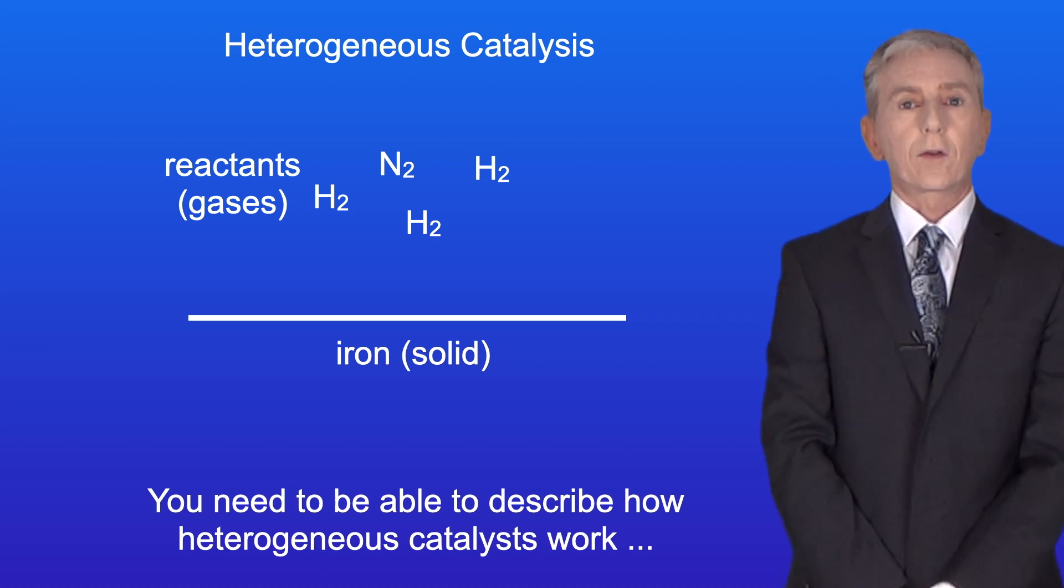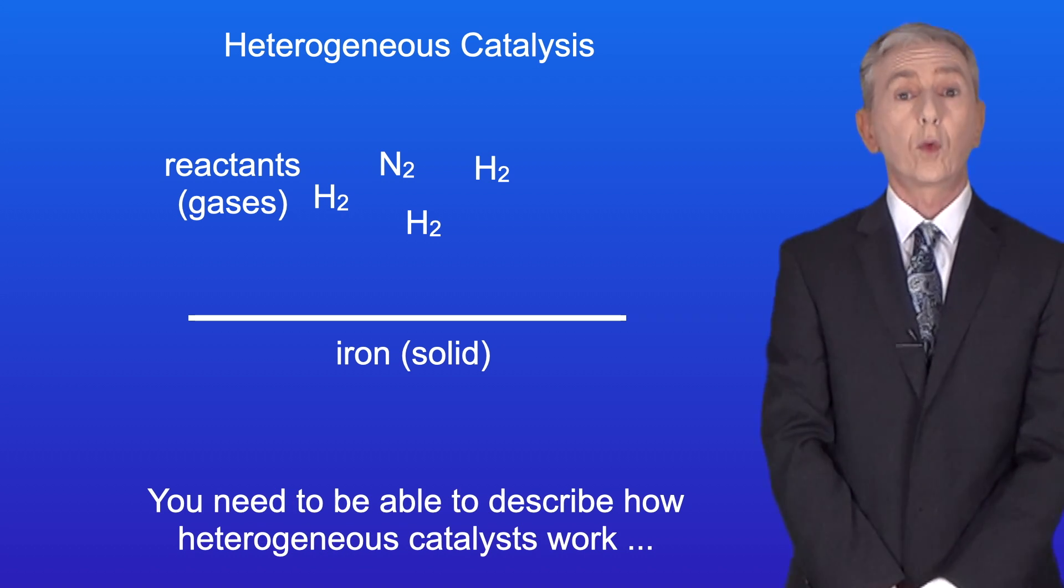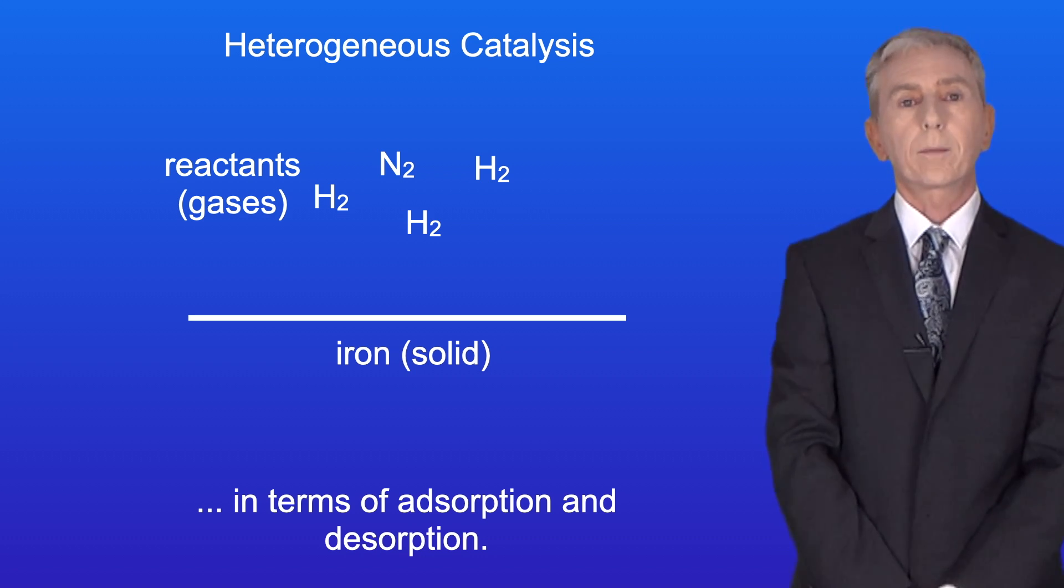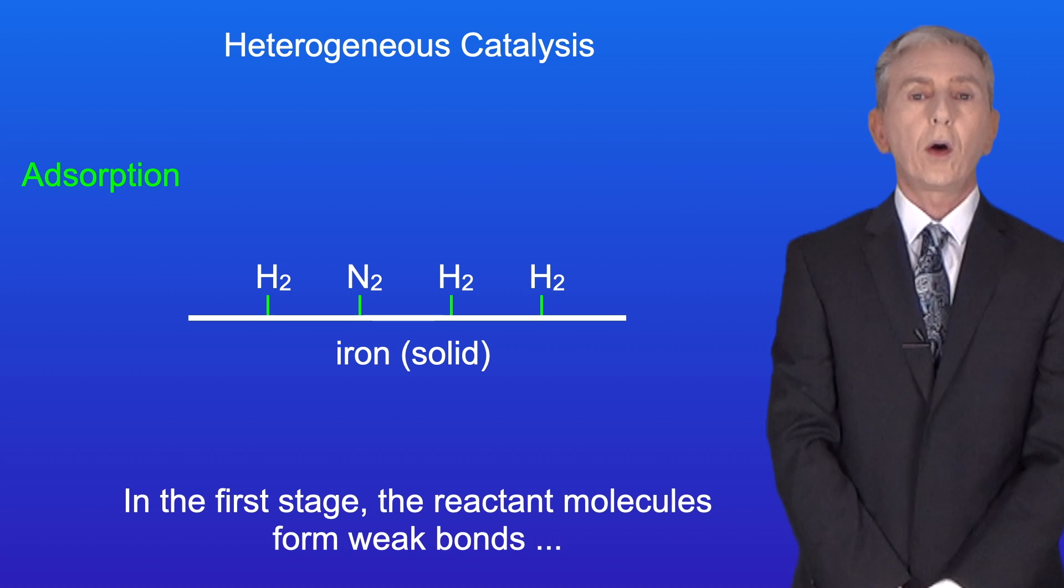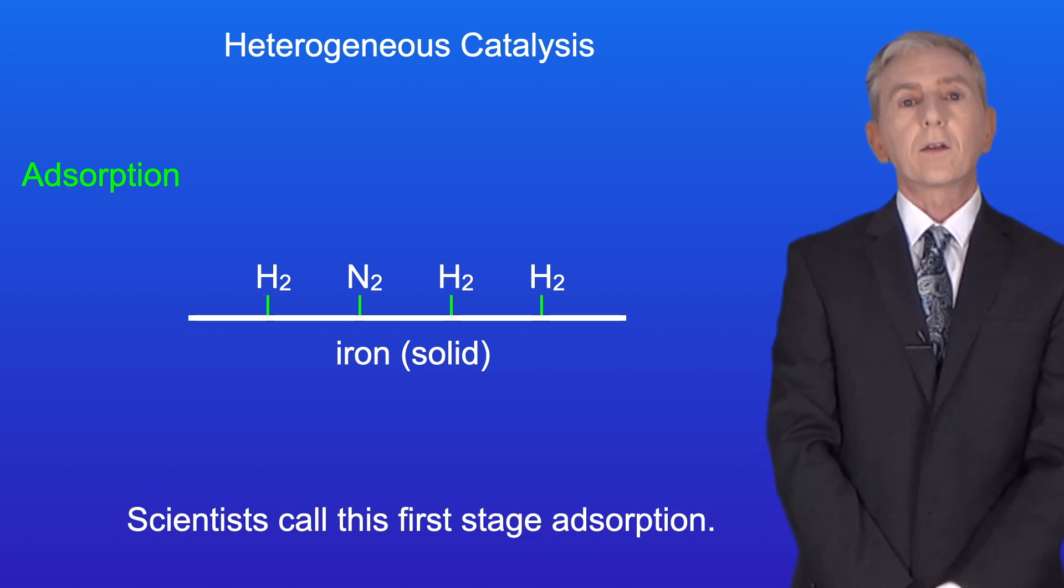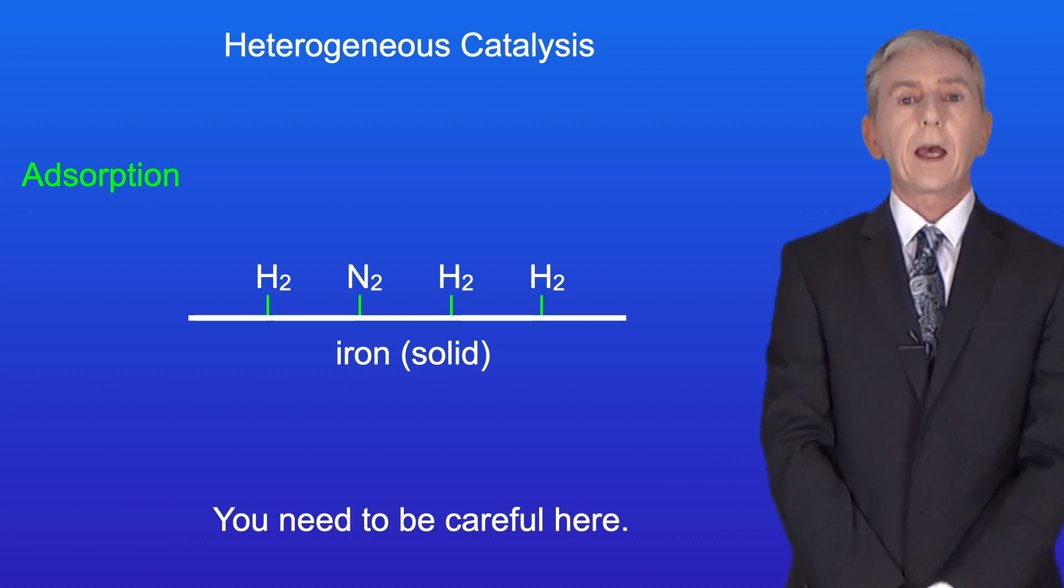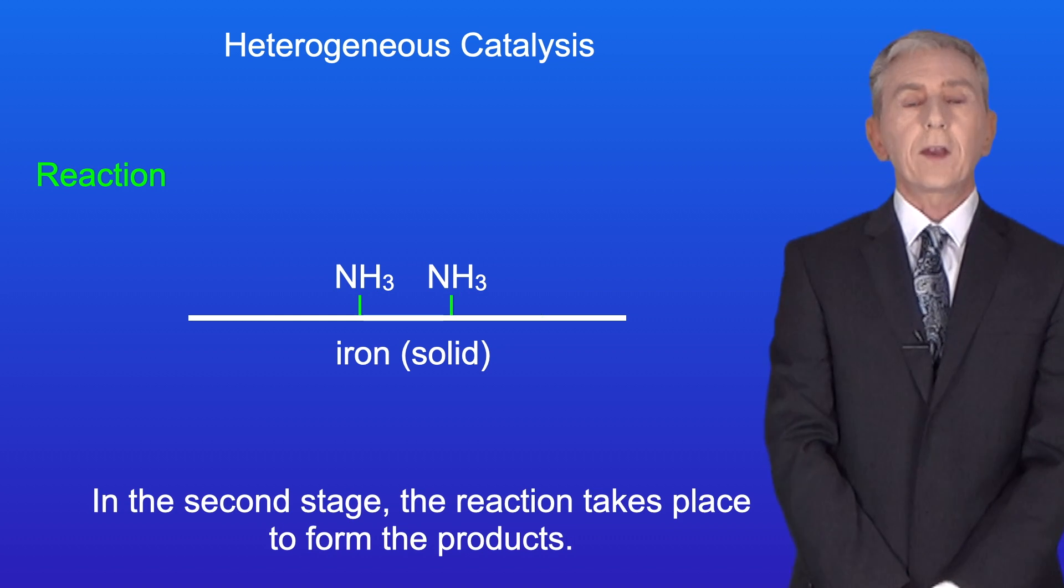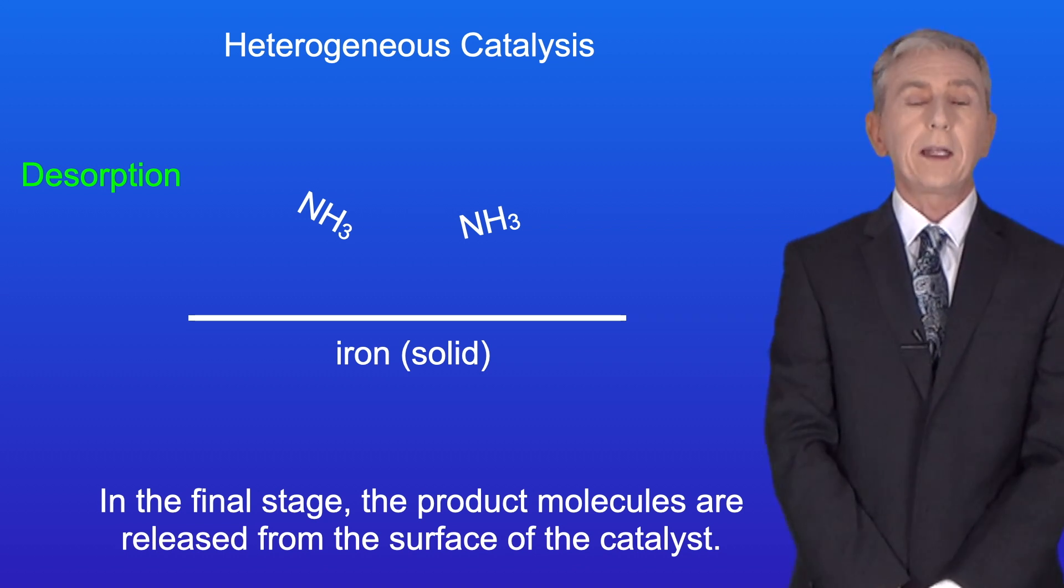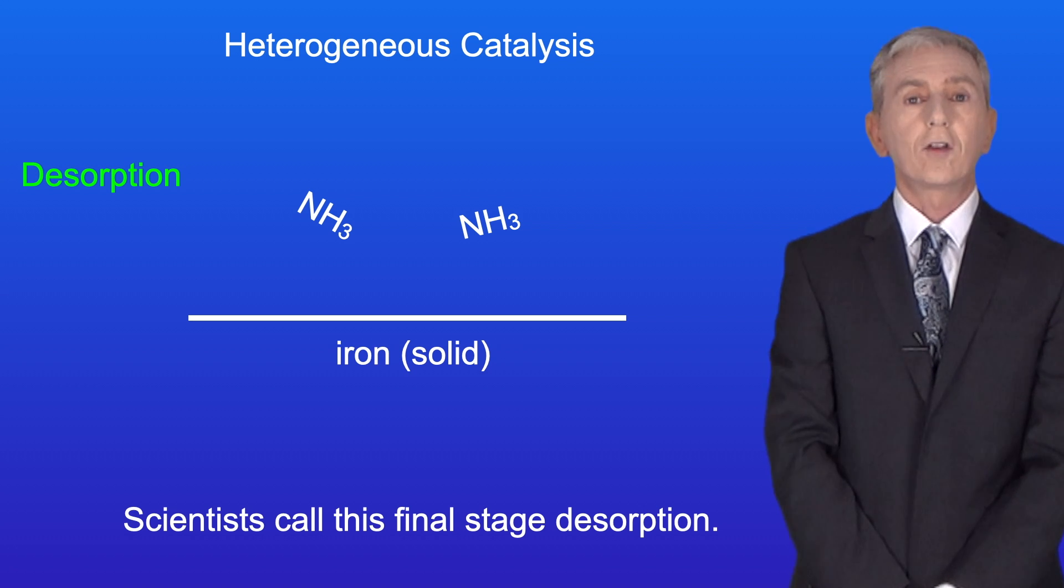Now you need to be able to describe how heterogeneous catalysts work in terms of adsorption and desorption. In the first stage the reactant molecules form weak bonds with the surface of the catalyst. Scientists call this first stage adsorption. Now you need to be careful here, this is adsorption not absorption. In the second stage the reaction takes place to form the products. And in the final stage the product molecules are released from the surface of the catalyst and scientists call this final stage desorption.